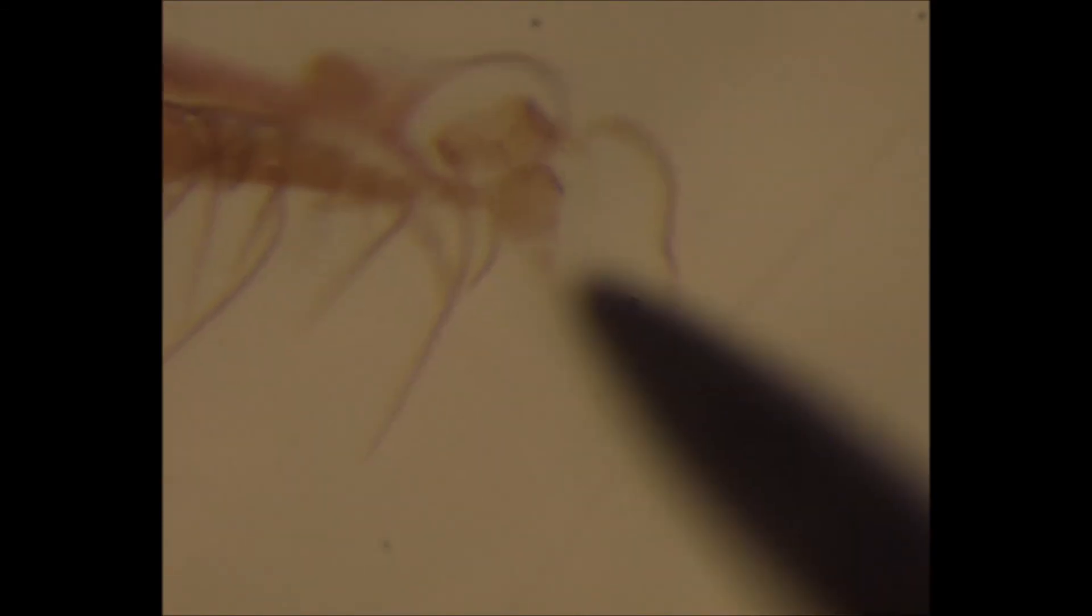And this is it. You can see the antennae: segment one base and segment two are about the same length. More detail than that will be visible under the compound scope.